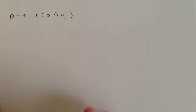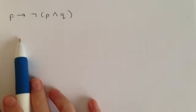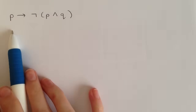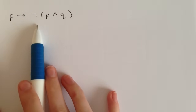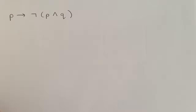Hi guys, so today we're working on truth tables. These can be found in discrete mathematics or logic type problems. Our first example is: if p, then the negation of p and q.